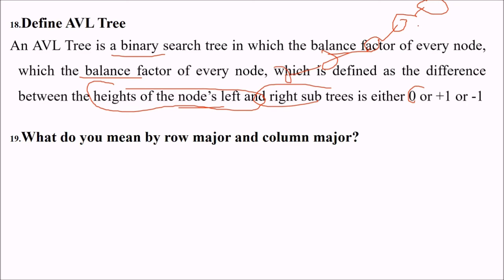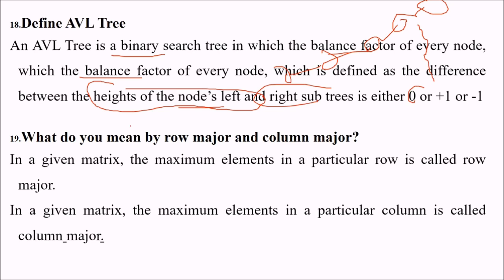What do you mean by row major and column major? If you have a matrix, the maximum elements in a particular row is called the row major and the maximum elements in a particular column is called the column major.